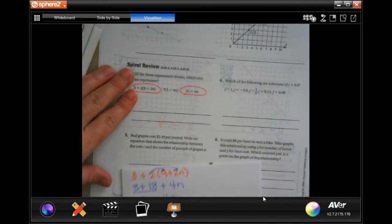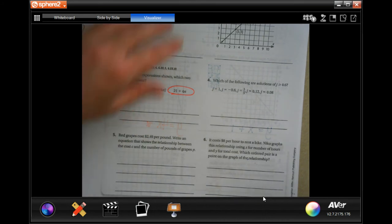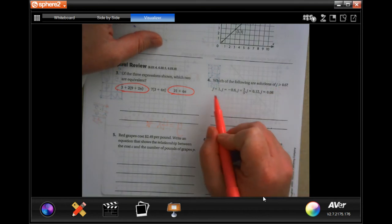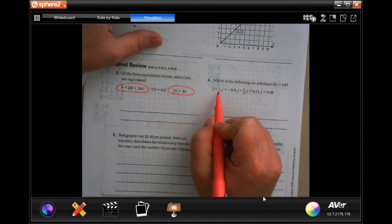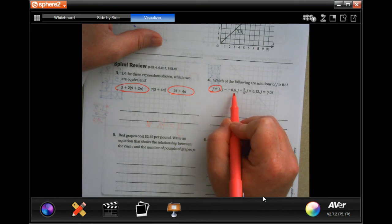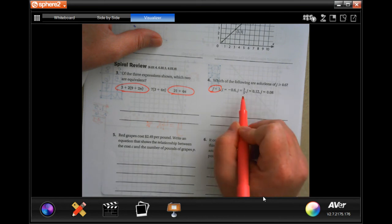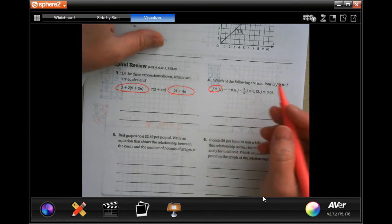We are going to go over to number four, and it says which of the following are solutions where j is greater than or equal to 0.6. Well, one is bigger than 0.6, so that one is. J equals negative 0.6 would be bigger than or equal to, no that's not it. Three fifths...